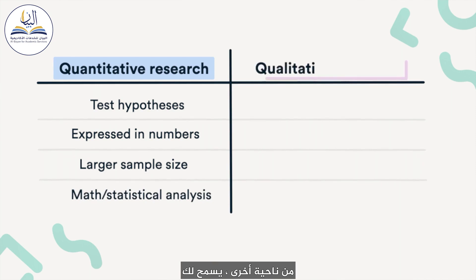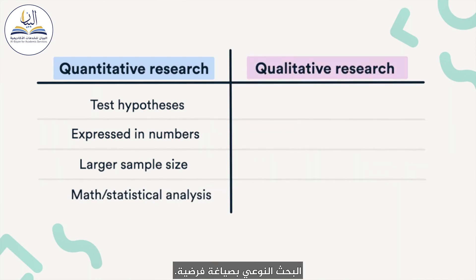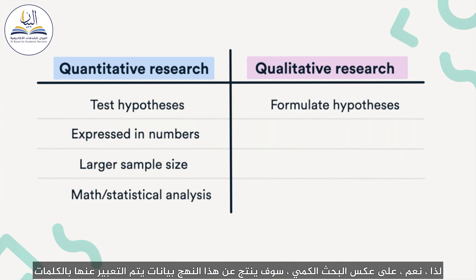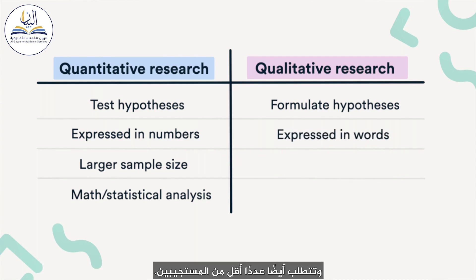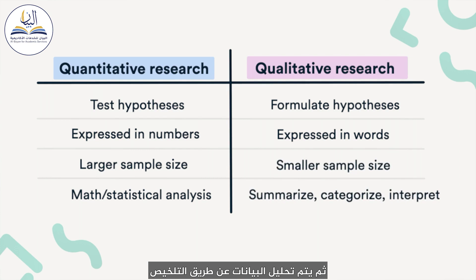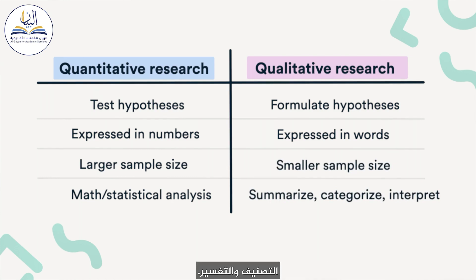On the other hand, qualitative research allows you to formulate a hypothesis. Opposite to quantitative research, this approach will yield data that's expressed in words and also require fewer respondents. The data is then analyzed by summarizing, categorizing, and interpreting.